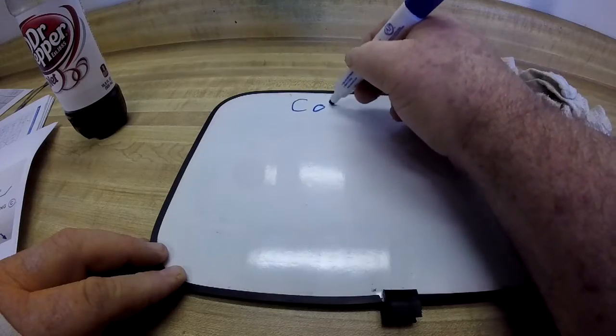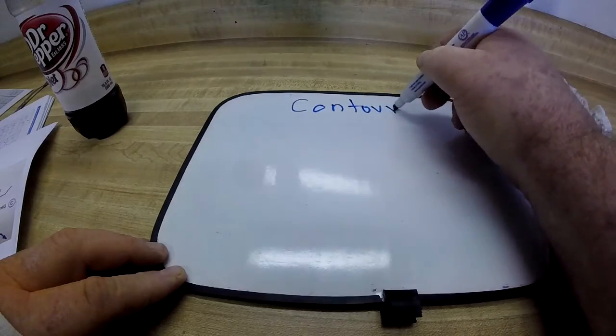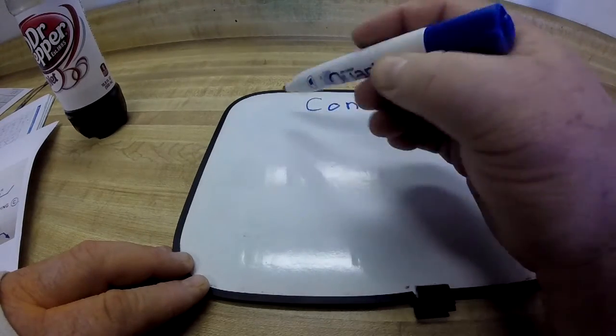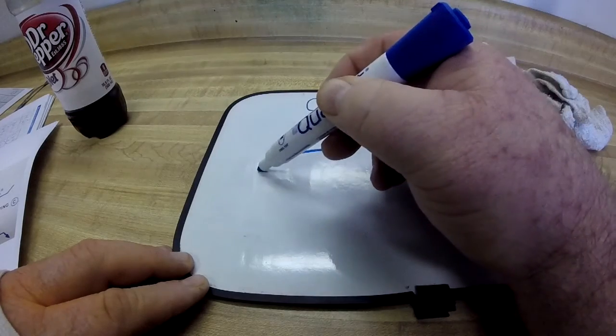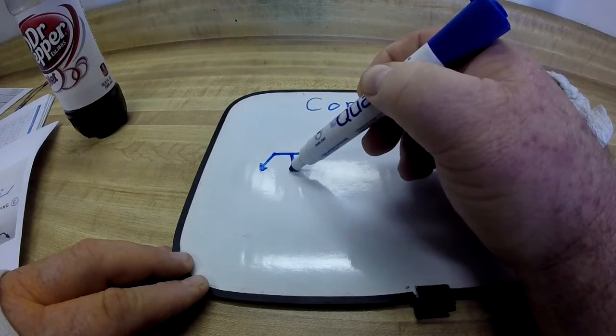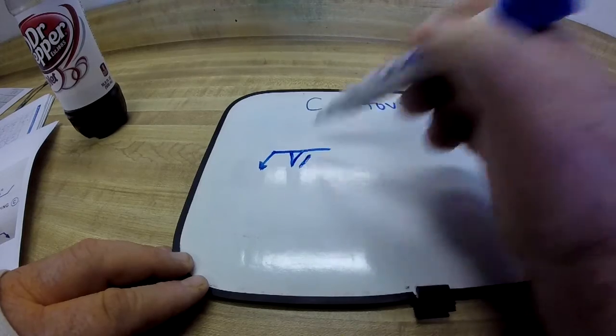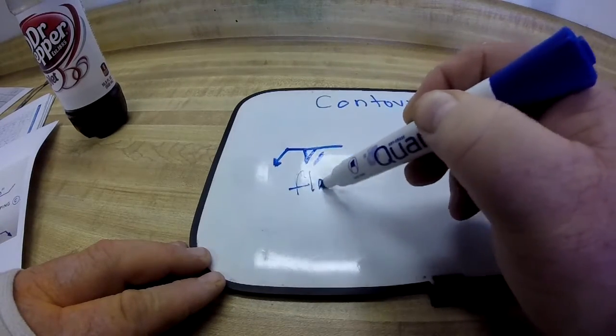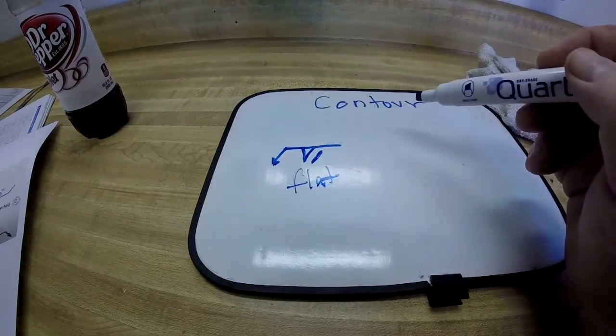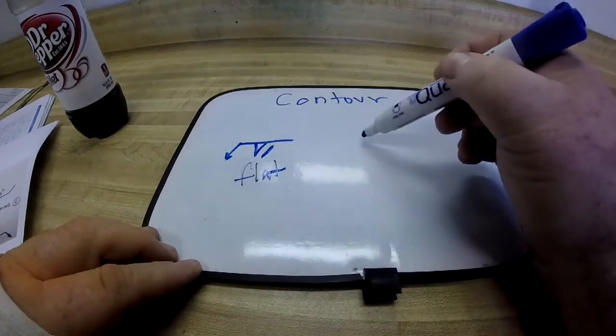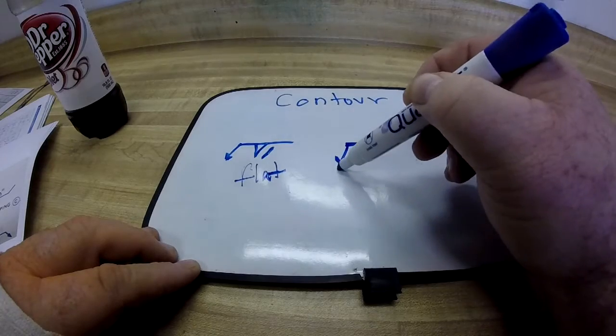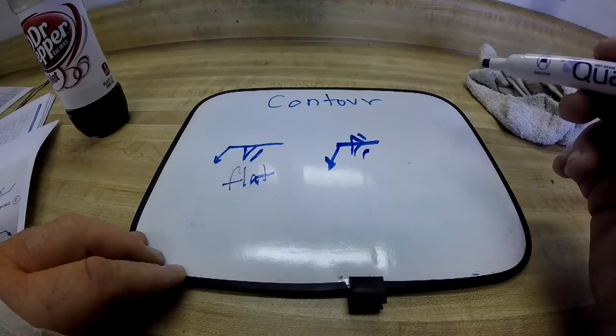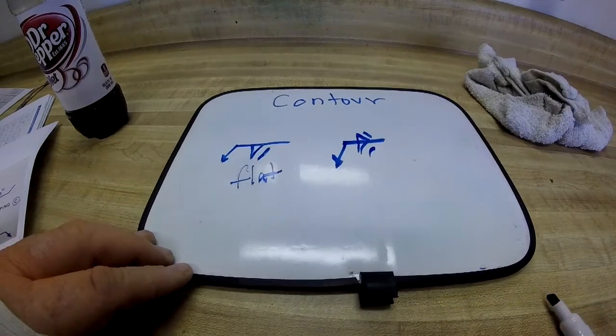A little bit about contour. If you have your weld symbol with say a fillet weld and a line, that just means a flat contour. And it can be on both sides, either side. Something like that.